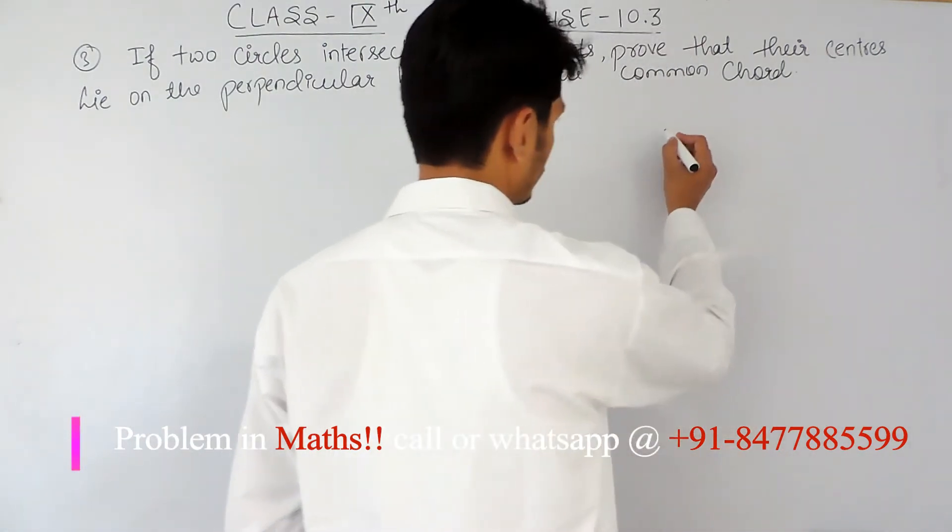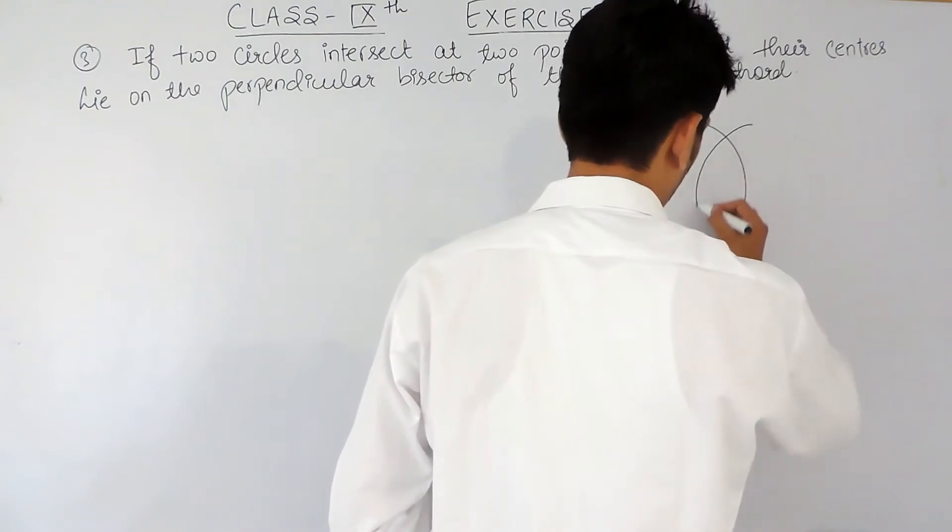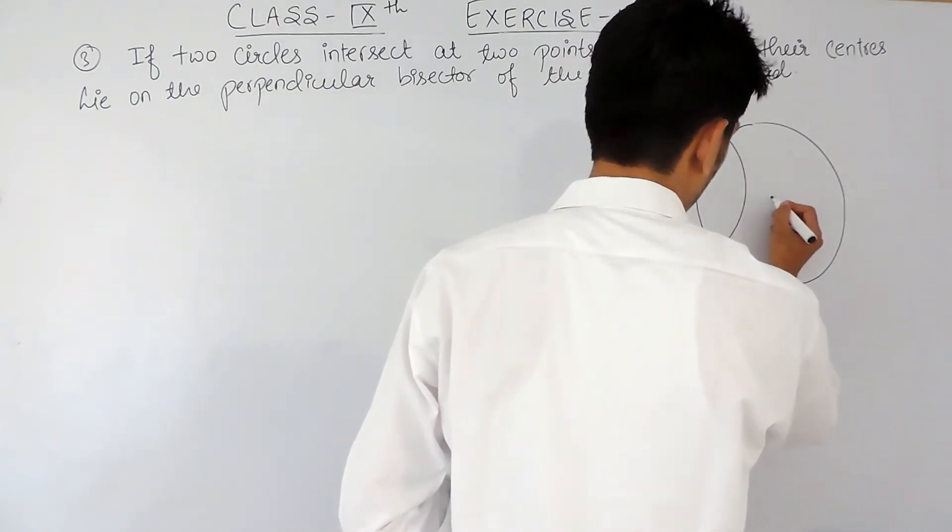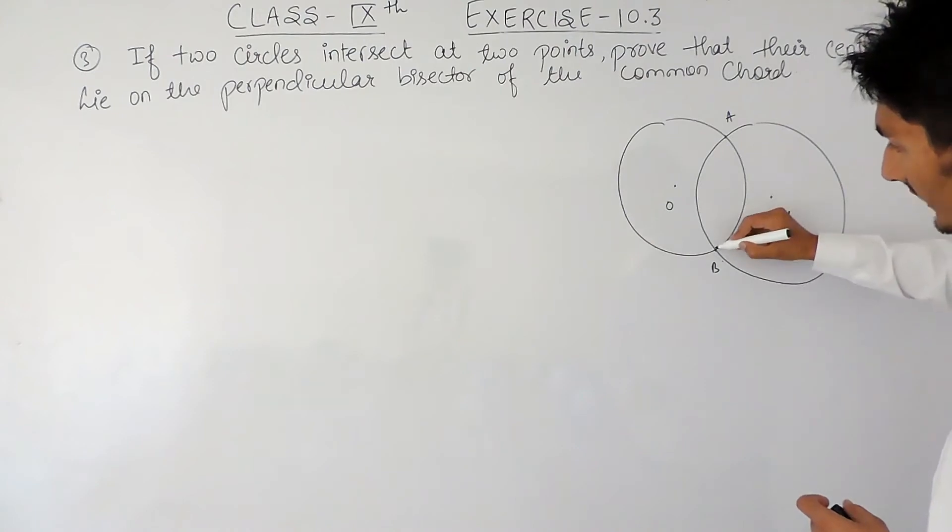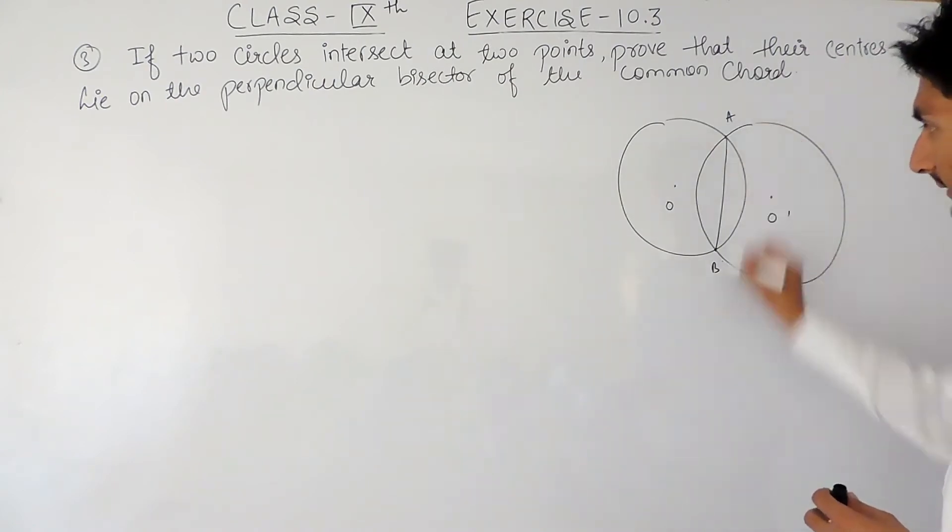So here you are given two circles. The center for this circle is O and the center for this circle is O'. They intersect each other at two points, and let's consider these two points as A and B. If I join these two points, AB will be the common chord for both the circles.